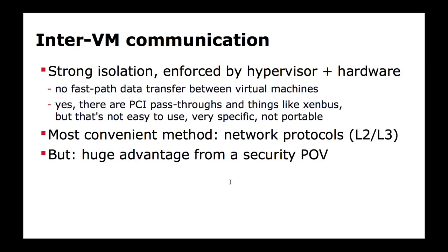What does this mean for communication between instances? Communication between VMs must use traditional network protocols because the hypervisor enforces extremely strong isolation between VMs — you can't have one VM messing with the memory, files, or disks of another. That's one of the main points of virtualization: strong isolation so that if you're Amazon, you can run two customers' VMs on the same hardware with confidence they can't snoop on each other.